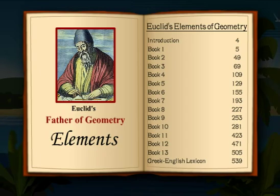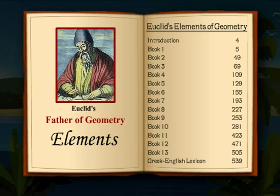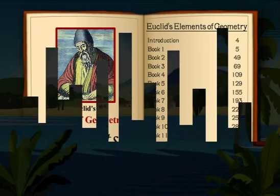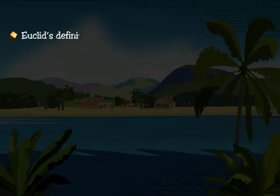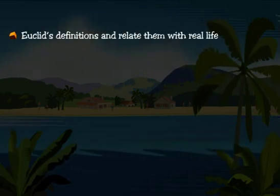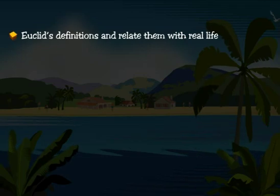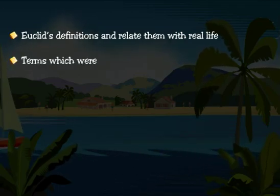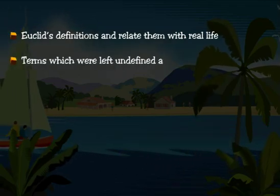That is why Euclid is known as the father of geometry. In this chapter, you will study about Euclid's approach to geometry. Let's start a journey of Euclid's geometry. Here you will study about Euclid's definitions and relate them with real-life terms, including which terms were left undefined and the reason for doing so.